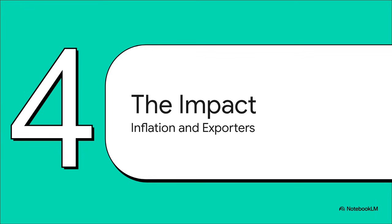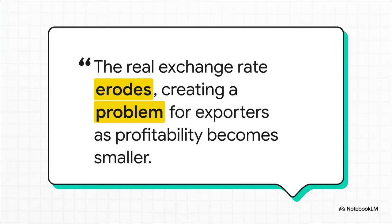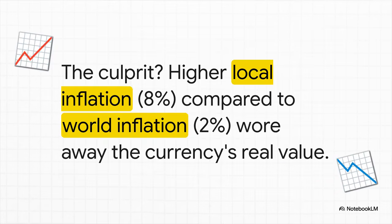So a number went down — big deal, right? Well, actually, yeah, it's a huge deal. This erosion has a massive impact on the real economy, especially for a country's exporters — the businesses trying to sell their stuff to the rest of the world. When that real exchange rate erodes, it gets harder for businesses to make money selling things overseas. Why? Simple: every dollar they earn abroad just doesn't go as far when they bring it back home to pay for their own costs. Their profits get squeezed. So what's the culprit behind this erosion? It all comes back to that gap in inflation. Because prices in Israel were shooting up so much faster than in the US, the real value of every single dollar earned from exports just got smaller and smaller.